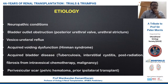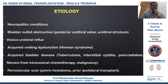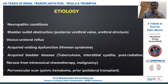Coming to etiology, the neuropathic conditions and bladder outlet obstruction in pediatric as well as adult patients mainly include urethral stricture disease, vesicoureteric reflux, voiding dysfunction syndromes, and diseases which affect the bladder — particularly tuberculosis in our country, interstitial cystitis, and post-radiation causes.